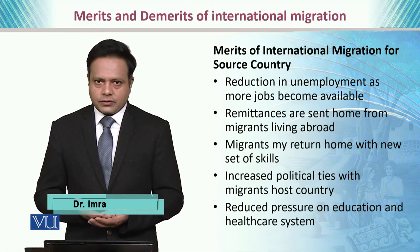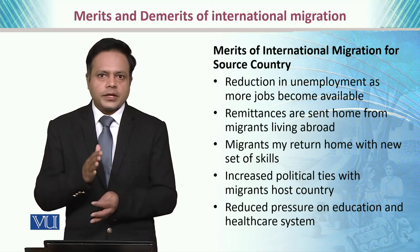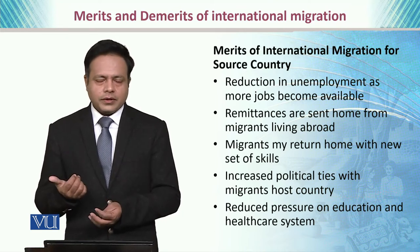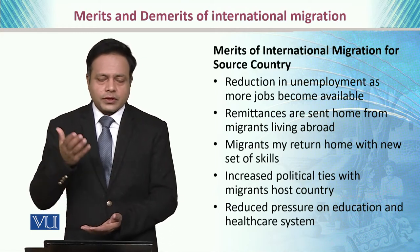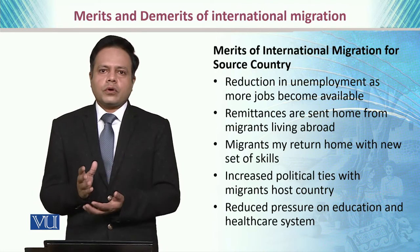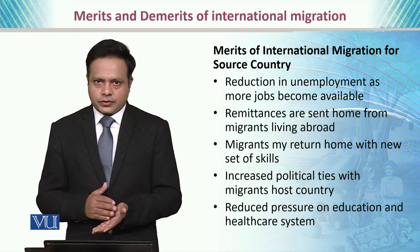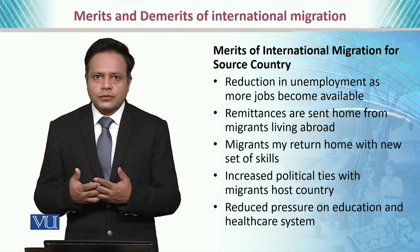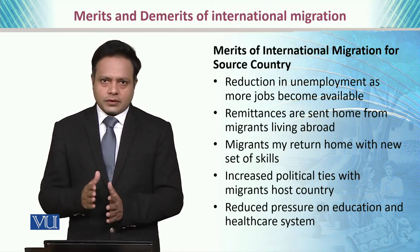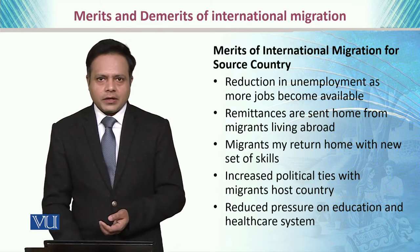If we talk about the merits of international migration for the source country, the first is the reduction in unemployment as major jobs become available, not only in Pakistan but also abroad. Remittances sent home from migrants living abroad become part of Pakistan's GNP and help boost the economy. Migrants may also return home with new sets of skills, especially educational migrants who go abroad for specialized skills. There are increased political ties with the host country, producing positive diplomatic relationships through cultural exchange programs, and it reduces pressure on education and healthcare systems of the home country since part of the population emigrates, resulting in potentially less burden on available resources.